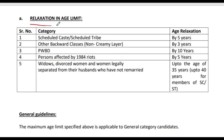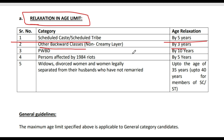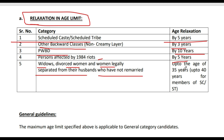Now regarding relaxation in the age limit: Scheduled Caste candidates get 5 years relaxation, OBC gets 3 years, PWBD gets 10 years, persons affected by riots get 5 years. Widows, divorced women, and women legally separated from their husbands who have not remarried get up to 35 years, and up to 40 years for members of SC/ST. The cut-off date for eligibility criteria is 31st March 2023.